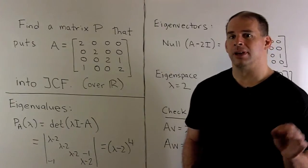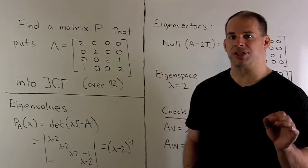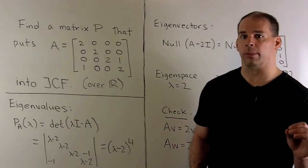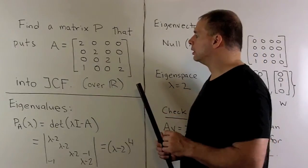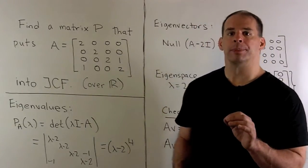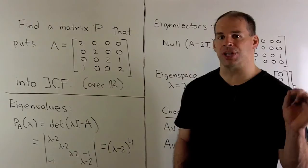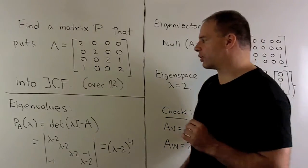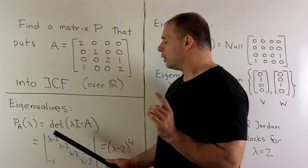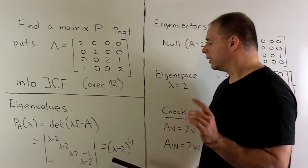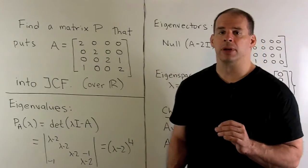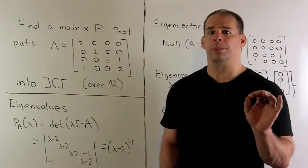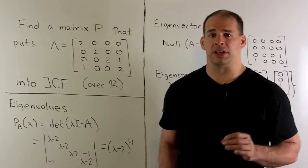Find a matrix P that puts the following 4x4 real matrix A into Jordan canonical form. As before, we start by finding the eigenvalues and eigenvectors for A. We start with the characteristic polynomial. When we compute this, we get lambda minus 2 to the fourth power. So we're going to have only one eigenvalue equal to 2 with multiplicity 4.